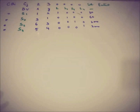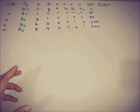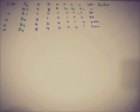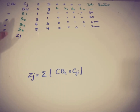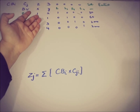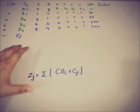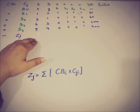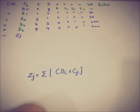Now we apply the simplex algorithm. The first thing is to find Zj by multiplying the Cbᵢ values (coefficients of basic variables in the objective function) by the corresponding column entries and summing. Since all Cbᵢ are 0 at this initial stage, Zj equals 0 for all columns.